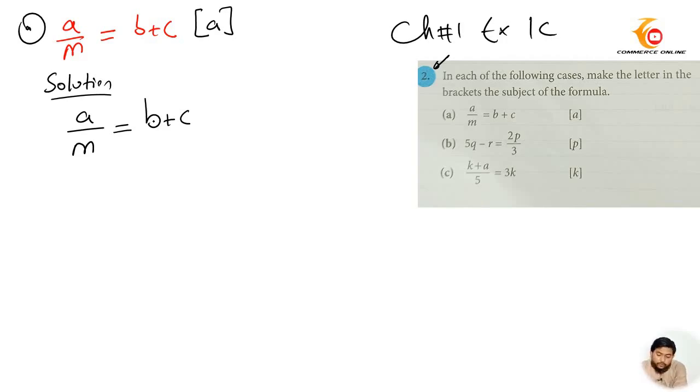Now I will solve it further. If you look closely, M is dividing with A. When we change its direction, that will be M multiply with B plus C. Yani M divide ho raha hai, equal ho jayega, multiply ho jayega, and this is our answer.